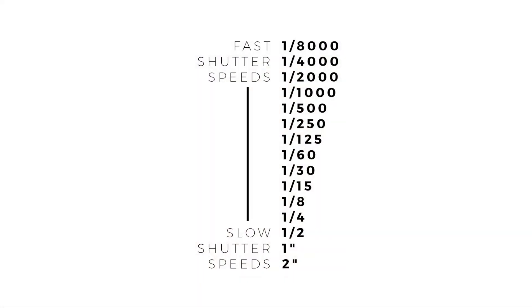The speed at which the shutter opens and closes can be varied. The faster the speed, the shorter the period of time the shutter is open and the less light that falls on the film. Shutter speed is measured in fractions of a second. A speed of 1/60th of a second means the shutter is open for 1/60th of a second. A speed of 1/500th of a second is faster, and 1/10,000 is very fast indeed. Basically, the shutter speed is the exact amount of time, or exposure time, that your camera records an image.